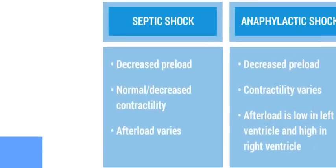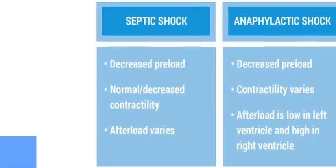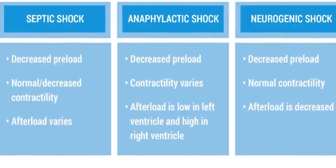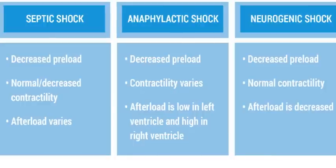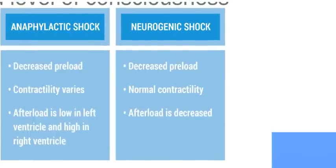In septic shock, there is a decreased preload, normal or decreased contractility, and variable afterload. In anaphylactic shock, there is a decreased preload, variable contractility, and the afterload is low in the left ventricle and high in the right ventricle. In neurogenic shock, there is a decreased preload, normal contractility, and a decreased afterload.